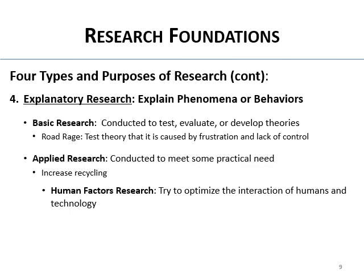One subtype of applied research is human factors research, whose goal is to optimize the interactions of humans and technology in a particular environment. For example, originally when cell phones came out, they had no speakers or Bluetooth, and people were distracted driving while using them. Someone figured out: why not run it through the car stereo? That was a way to improve the interaction of humans and cell phones in cars.